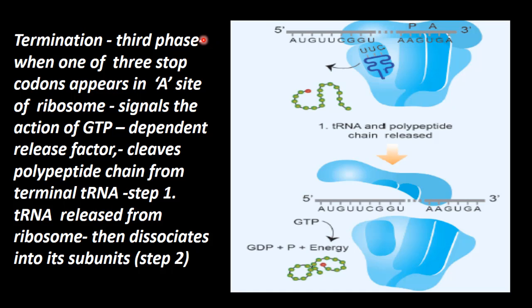In this third phase, you get a stop codon. When one of the three stop codons appears in the A site, one stop codon comes into the A site.